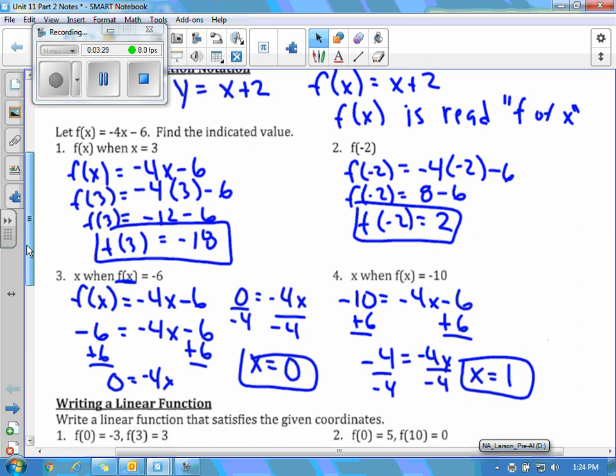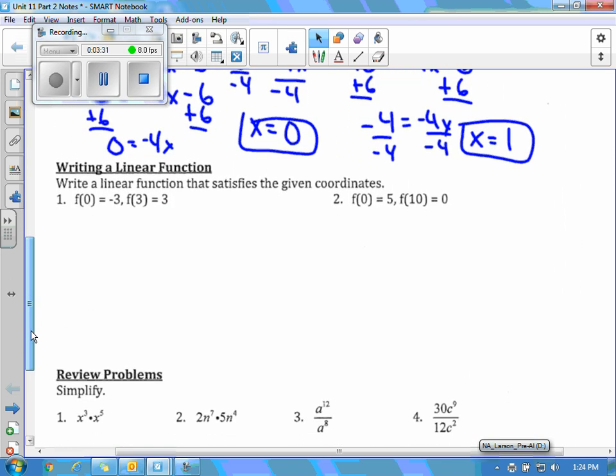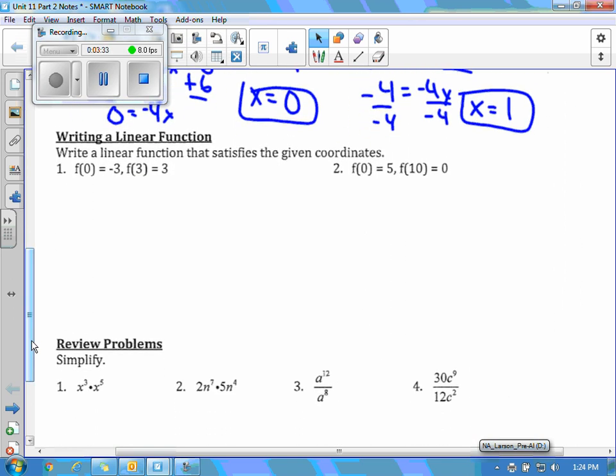The next section, we're going to look at how to write a linear function. So in part 1, we looked at linear equations. This is the same sort of thing, but we're dealing with the functions of linear equations. So it says, f of 0 equals negative 3, and f of 3 equals 3. The first thing you want to do is rewrite these as ordered pairs. So remember that the 0 here is our x. So we have 0 comma negative 3, and 3 comma 3 is our point.